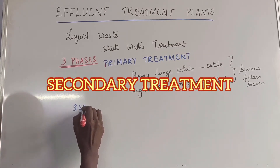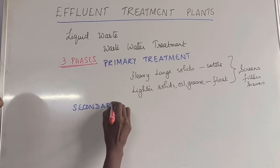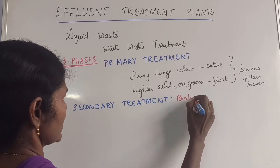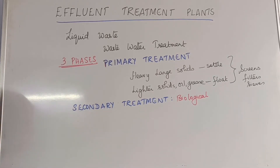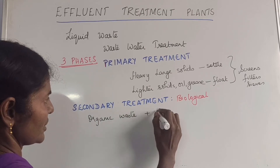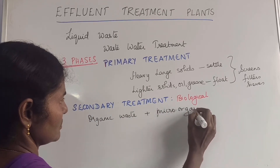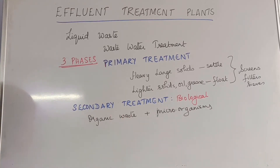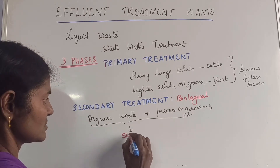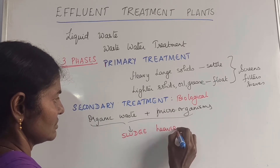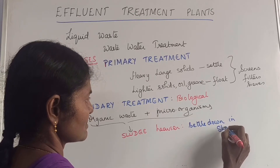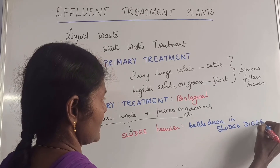Next we move on to the secondary treatment, which is biological treatment. There is some organic waste which can be broken down — that's biodegradable. So organic waste is treated with microorganisms. These microorganisms work to decompose and break down the organic waste, and they work together to form something called sludge. This sludge is heavier, so it settles down in sludge digesters. This is what happens in the secondary treatment.